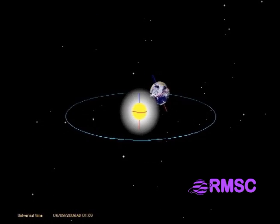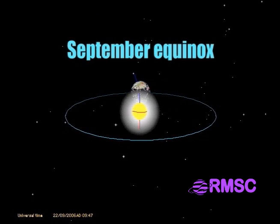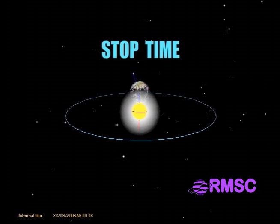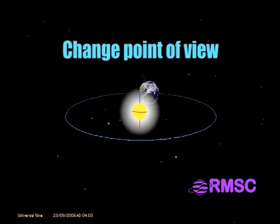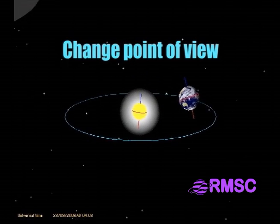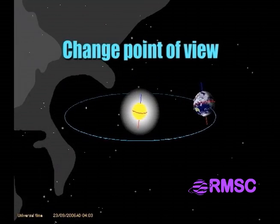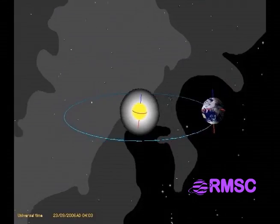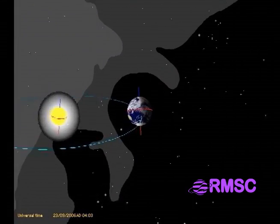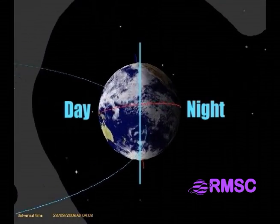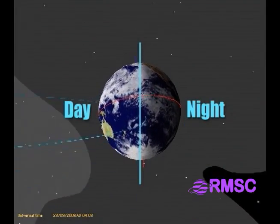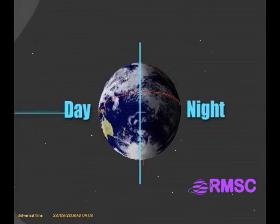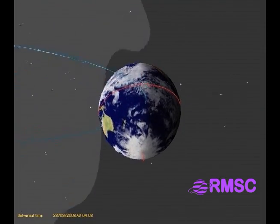Three months later, we reach the September equinox. Earth's North Pole still points toward the North Star. We'll change point of view so we can look closer and compare daytime and nighttime in September. At the September equinox, all parts of Earth get equal amounts of day and night, just as they did back in March.